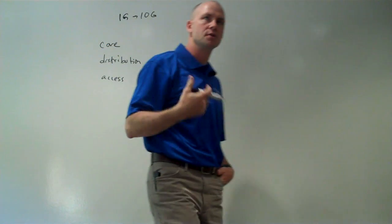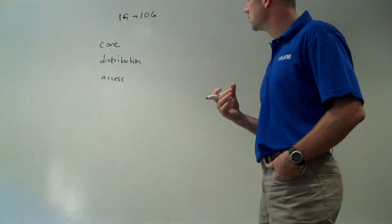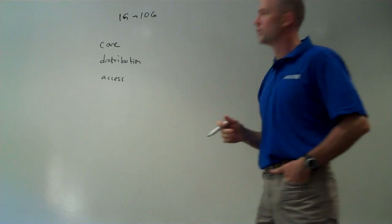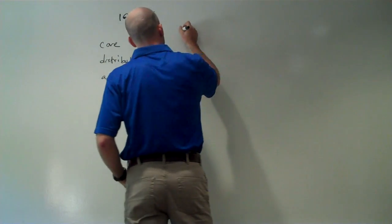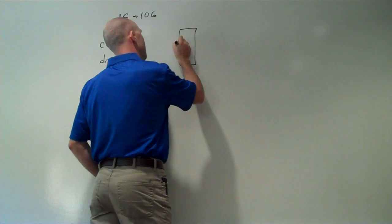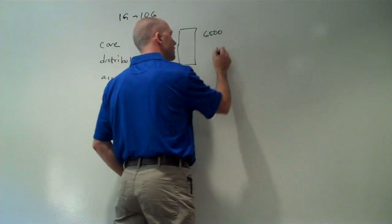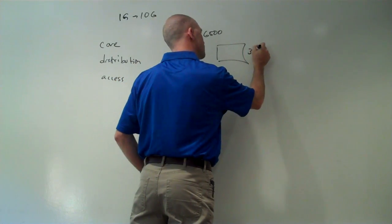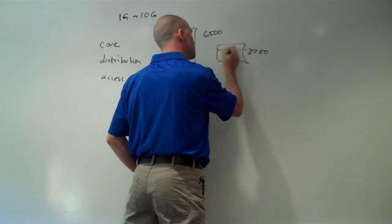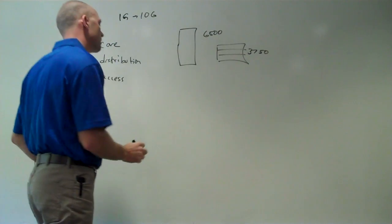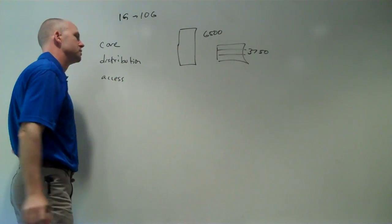And a lot of times in mid-sized local area networks, core distribution is collapsed into a single switch. So for example, we might have an internally redundant 6500 switch or a stack of 3750 switches that are linked together. This could be the core, the collapsed core and distribution layer.